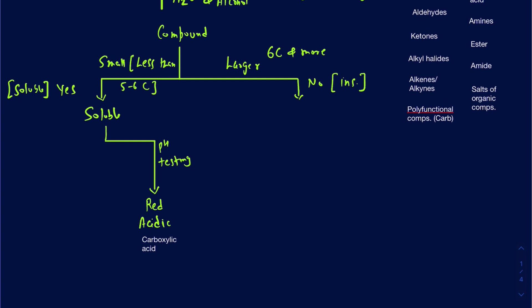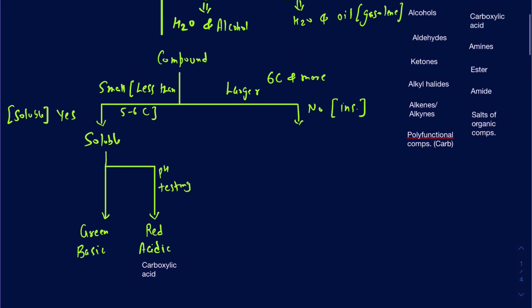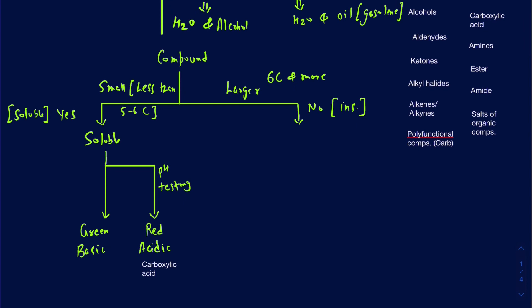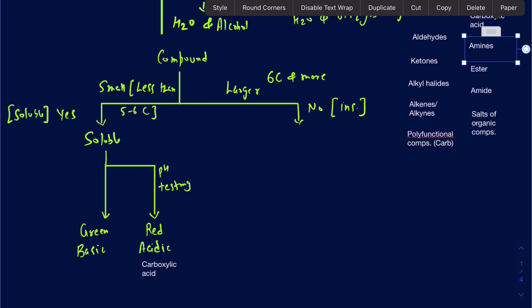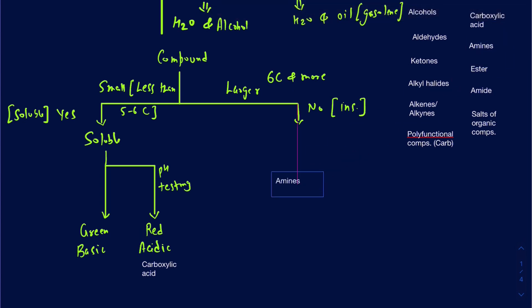But if your pH paper turns out to be green to bluish, then we are looking at a basic organic compound — something that has a basic functional group. The organic compounds that have basic functional groups are going to be your amines. So amines fall into that basic category.